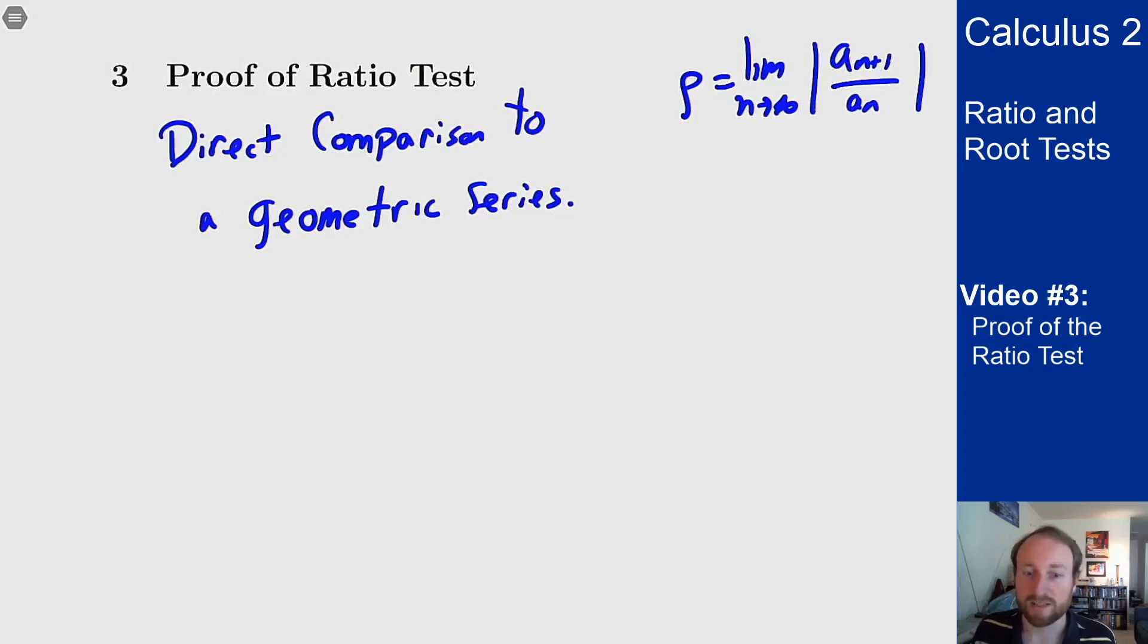There's many ways for this limit not to exist; in that case the ratio test doesn't apply. But if this limit exists and it equals some ρ, it means my series is almost geometric at the end. We'll make this more precise when I actually talk about how you prove this sort of statement.